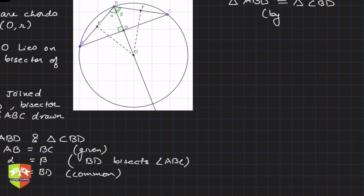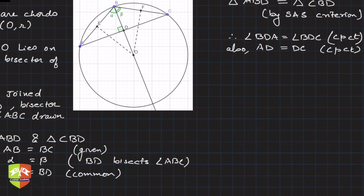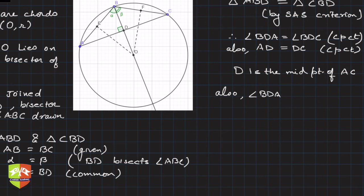Therefore, angle BDA is equal to angle BDC — by CPCT (corresponding parts of congruent triangles). Also, AD is equal to DC by the same reason, CPCT. That means D is the midpoint of AC.